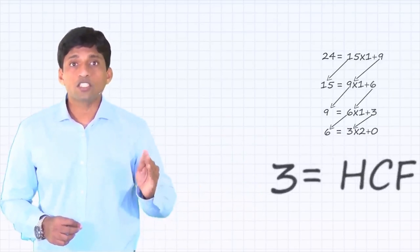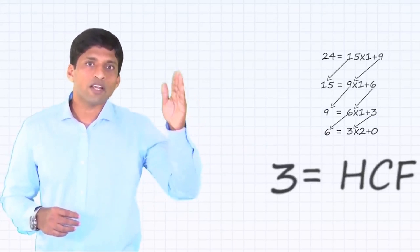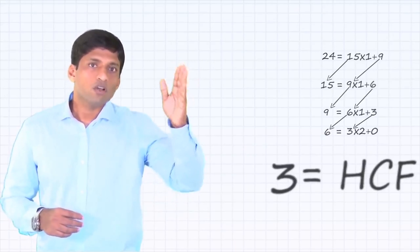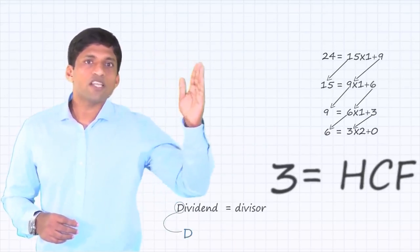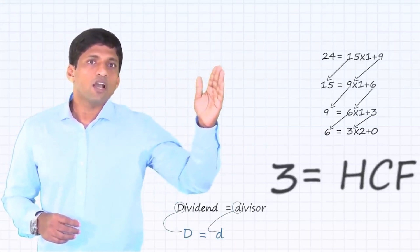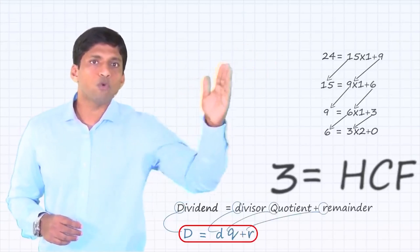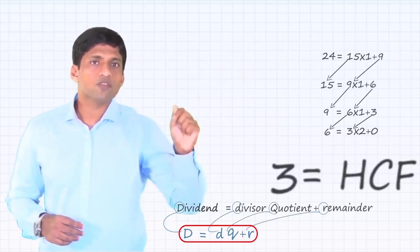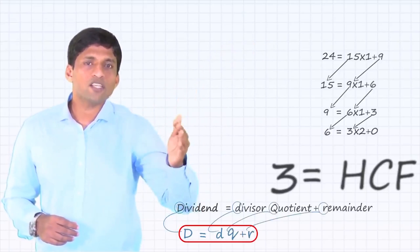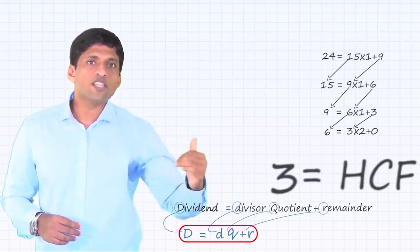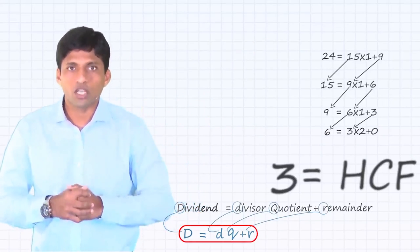This is Euclid's division algorithm using numbers. Now generalizing: if we write dividend as D, divisor as d, quotient as Q, and remainder as R, then D = d·Q + R. The divisor will become the next dividend, and the remainder will become the next divisor. Continue doing this process till the remainder is 0.